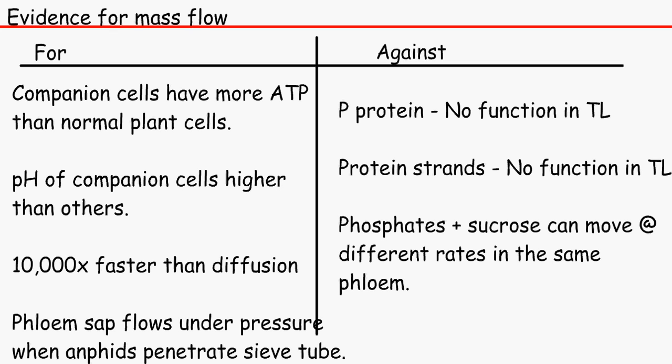It's also 10,000 times faster than diffusion. Therefore, it has to be mass flow. And also the phloem sap, it flows under pressure when an aphid kind of penetrates it with its stylus. And the phloem would just flow under the pressure into the aphid's mouth. Yum.